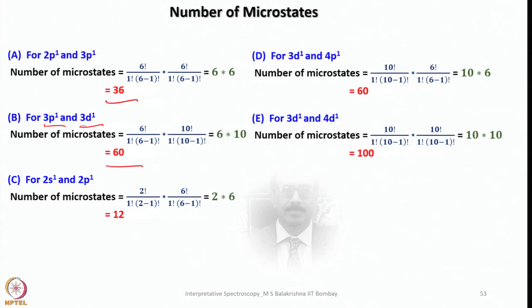Similarly, for 2s1 and 2p1: 2s1 has only 2 possible microstates, so 2×6 = 12. For 3d1 and 4p1 it is also 60. For 3d1 and 4d1, since any d1 system has 10 microstates irrespective of which subshell, it is 10×10 = 100.